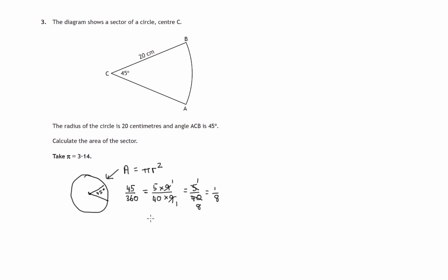There are other ways of getting there. If you think, two 45s make up 90 degrees, and there's four lots of 90 degrees in a complete circle, so you can see there'll be eight sectors exactly the same size as the one we're dealing with up here. So there's another way of thinking about one eighth.